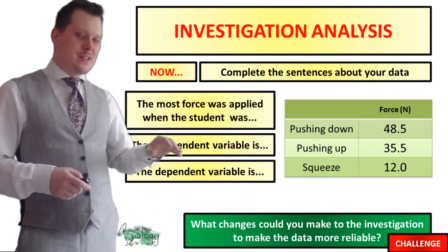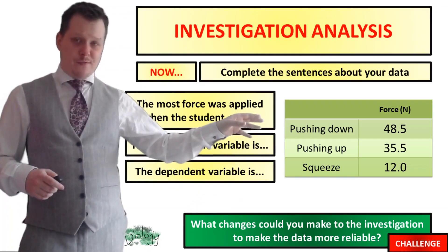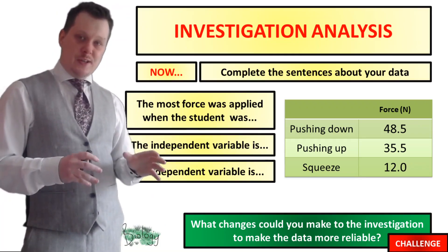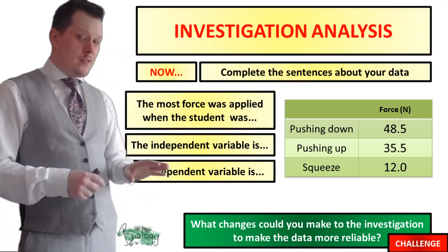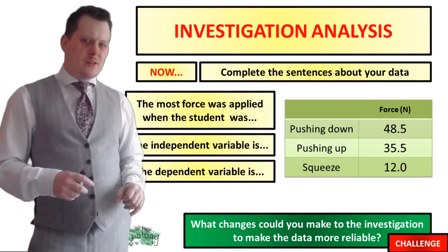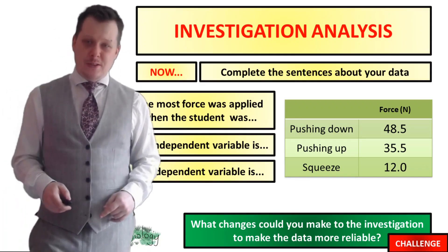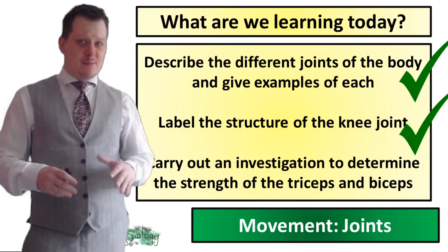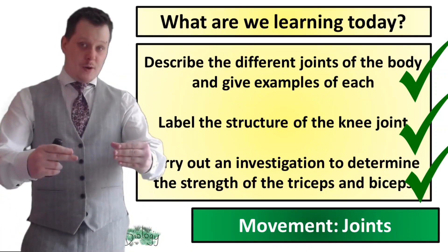The most force was applied when the student was pushing down — 48.5 newtons, the highest value. The independent variable, the thing we changed, is the muscles the student was using. The dependent variable, the thing we measured, is the force. We've now looked at data to determine the strength of the triceps when pushing down on the scale, the biceps when pushing up, and the forearm muscles when squeezing. If you have ideas on how to make the investigation more reliable, put them in the comments below.